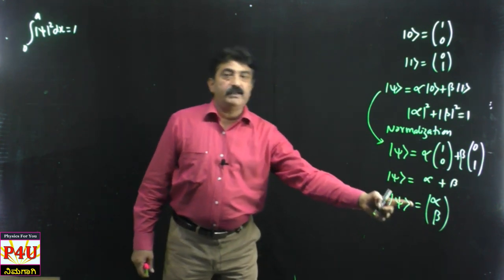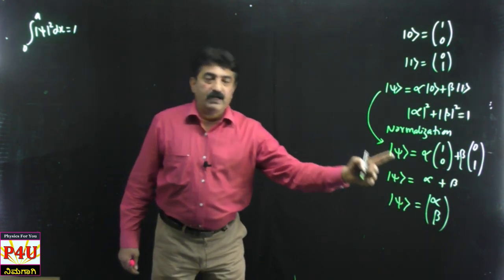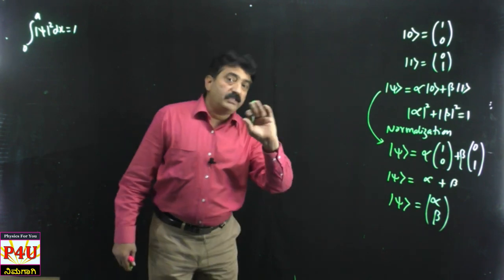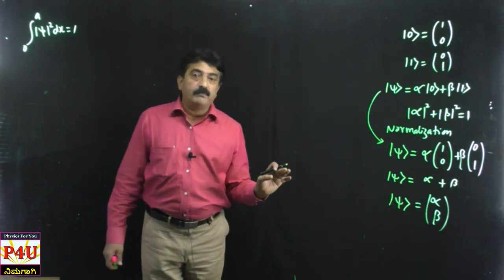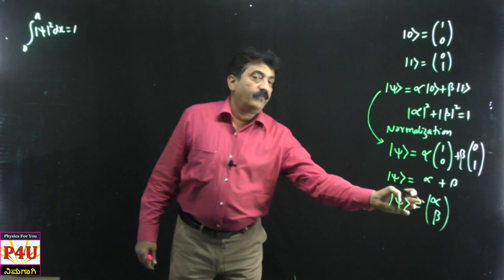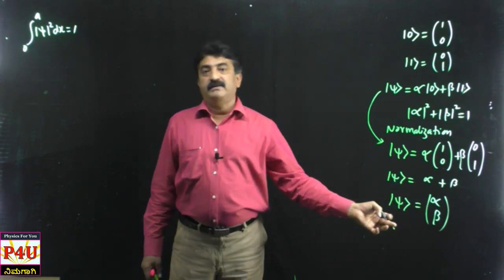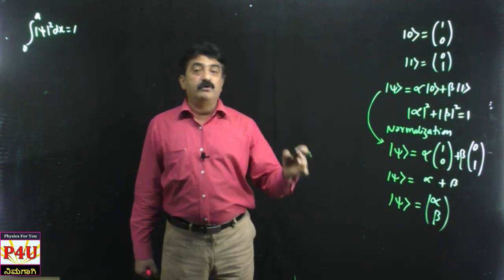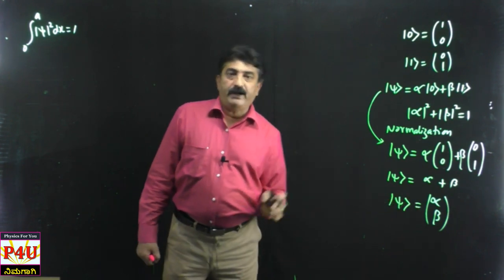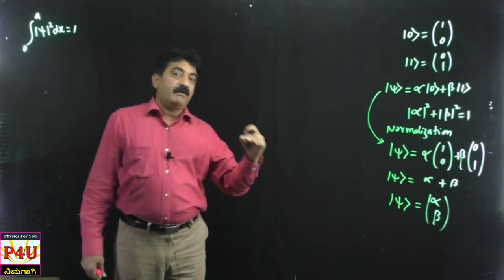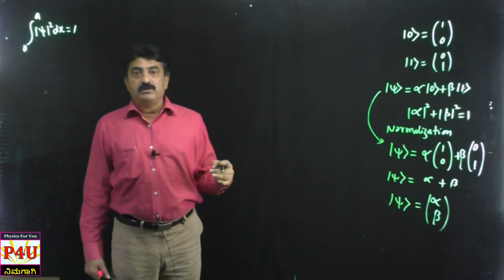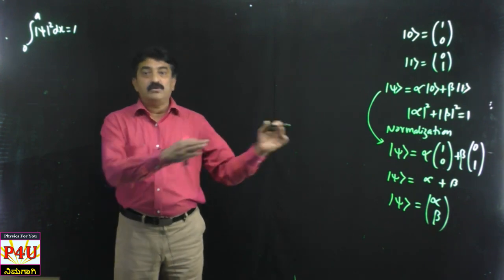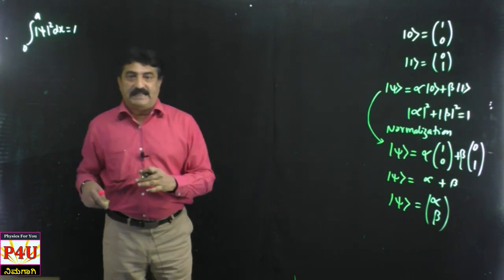If alpha is 1 then beta is 0, or if beta is 1 then alpha is 0. Alpha and beta cannot both be 1. The minimum value is 0 and the maximum is 1, similarly for beta. But alpha and beta can have in-between values also, like 1 by root 2, 1 by root 4, something like that. Those things we will discuss later on.